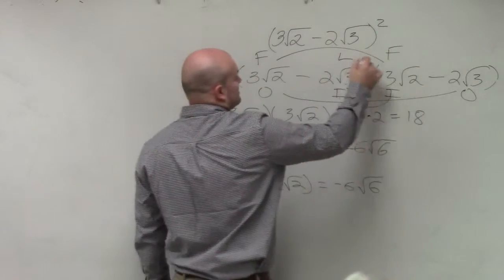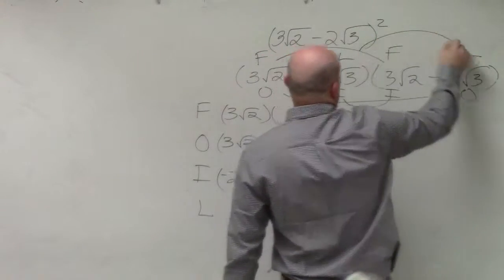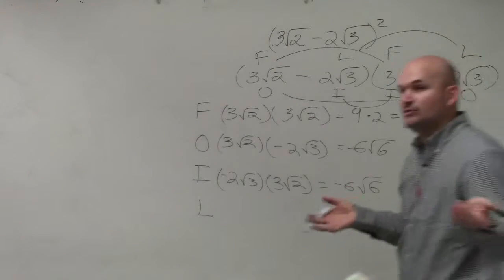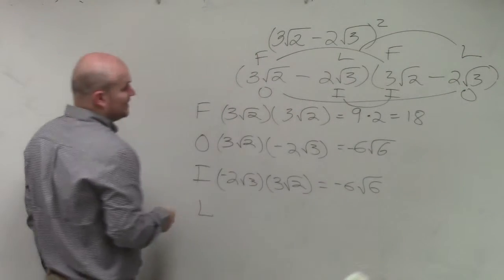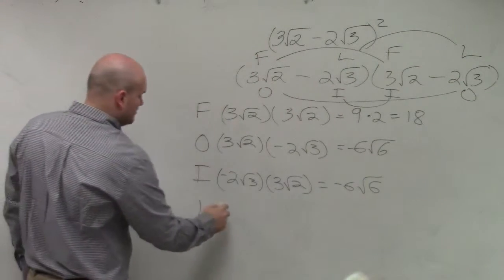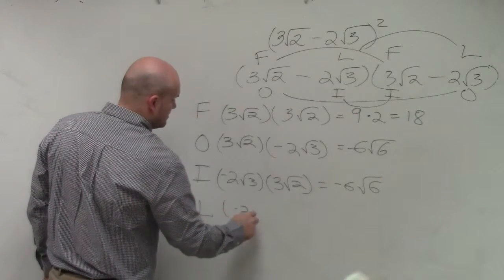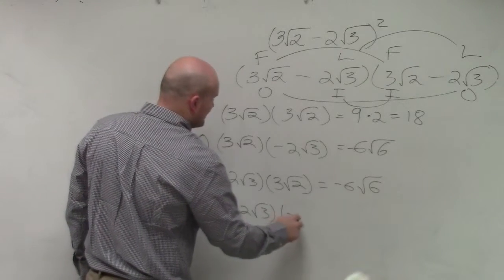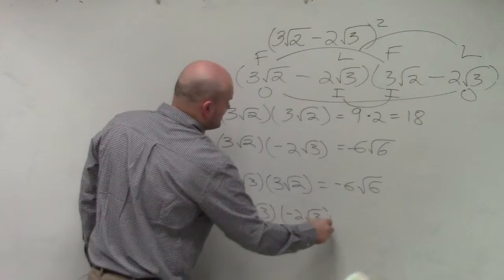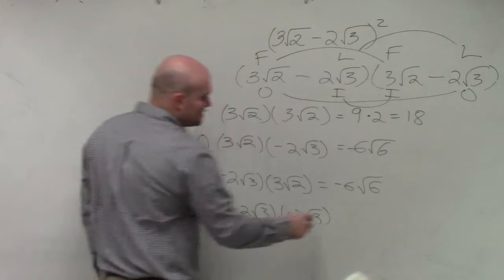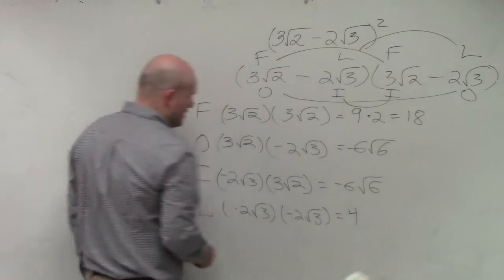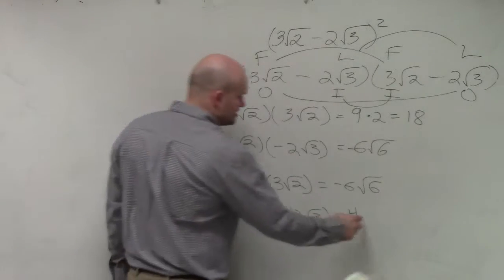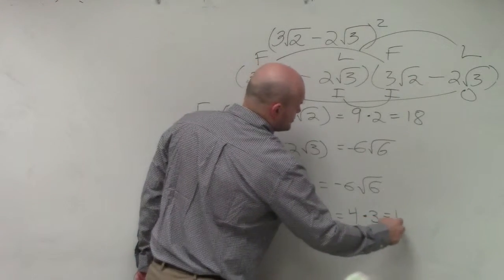And then the last one is last. You don't have to do this long FOIL method. If you want to use the box method or if you want to do another way to quick your FOIL, you can do that as well. But just for teaching purposes, I'm going to do it a little bit slower. So that's negative 2 square root of 3 times negative 2 square root of 3. Negative 2 times negative 2 is a positive 4, and then square root of 3 times square root of 3 is the square root of 9, which is just 3, which equals 12.